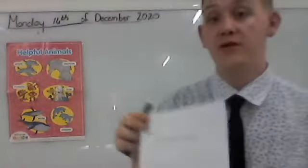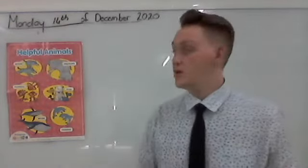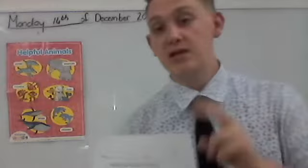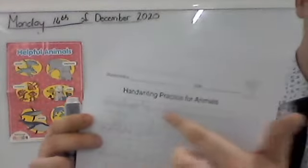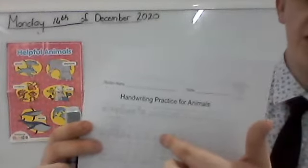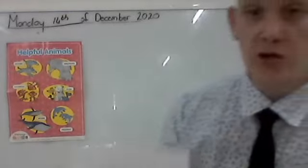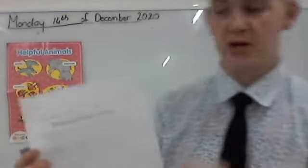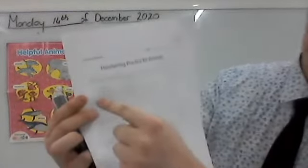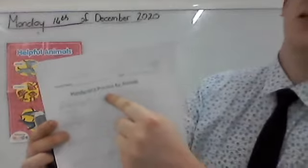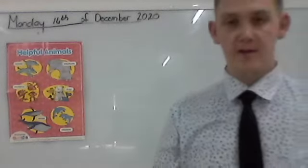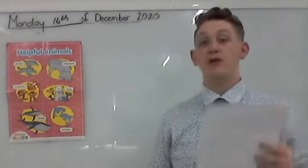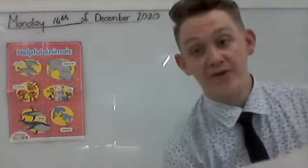You are going to go to the back and copy the words. You are going to trace two times — one, two. And then underneath you are going to write two times. So elephants, elephants — trace — and elephants, elephants — write. So that will be your worksheet for the afternoon.